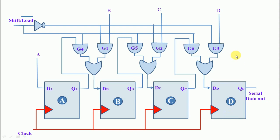This is the construction of the parallel in serial out shift register using logic gates. There is one control signal which controls the parallel input and serial output. The NOT gate outputs are connected to G1, G2, and G3. The other inputs of G1, G2, and G3 are the inputs B, C, and D, while input A is directly connected to DA.